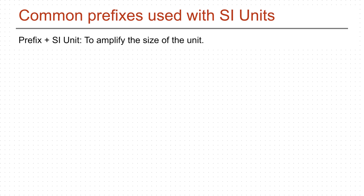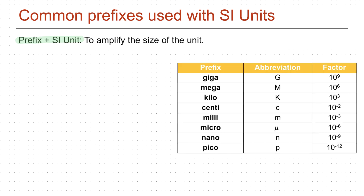In order to express an extremely large or extremely small number, we use prefixes placed before the SI unit to amplify the size of the unit. The prefix can either increase or decrease the size of the unit by several orders of magnitude. The following table shows the most common prefixes used in this course, and you need to memorize these prefixes.